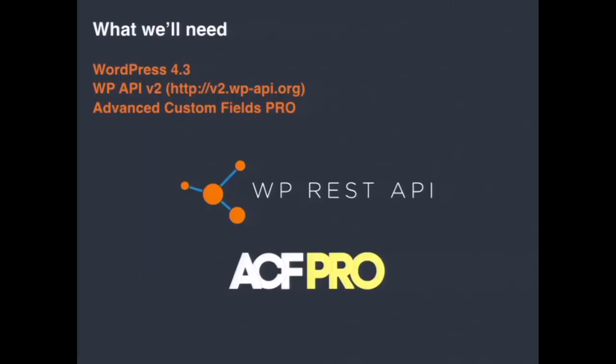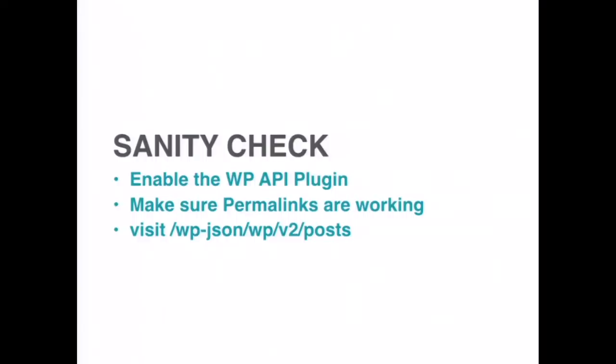What you'll need is WordPress 4.3, WP API v2 version two, and Advanced Custom Fields Pro. First thing I do — sanity check — you enable the plugin, click a few buttons, and make sure your permalinks are working. I am not exaggerating when I say that 90% or so of my grief with WordPress is with permalinks. So make sure your permalinks are working, and then you can visit your endpoint at slash WP JSON slash WP slash v2 slash posts — that's your endpoint.